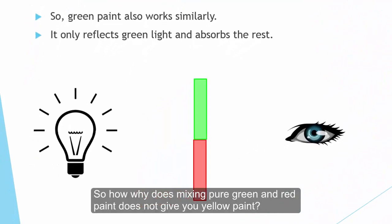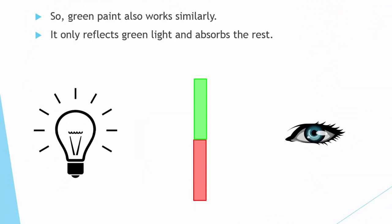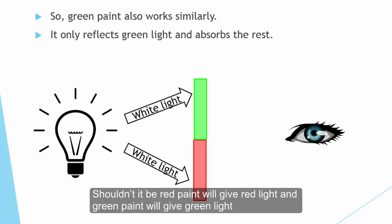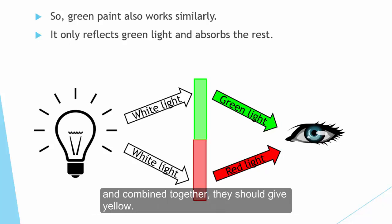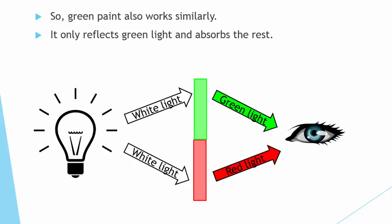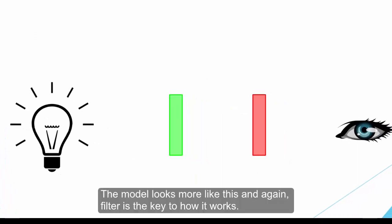So how does that explain mixing pure green and red paint doesn't give you yellow? Instead it gives you a black mass. Shouldn't red paint give you red light and green paint give you green light, and when combined together they give yellow? Unfortunately, this is not the model when we are mixing paint colors. So this one doesn't work this way.